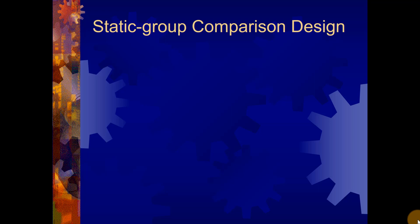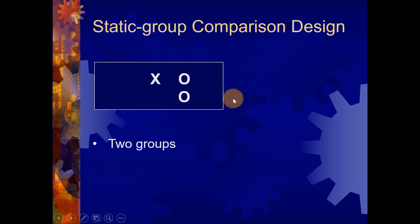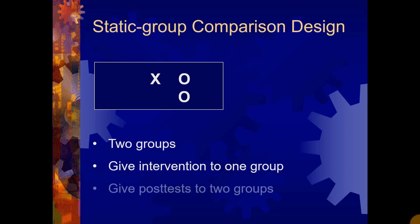The third and final pre-experimental design that your book covers is the static group comparison design, and it looks something like this. So we have two groups. We know that because there are two rows of letters. One is given the intervention, and both are given post-tests.